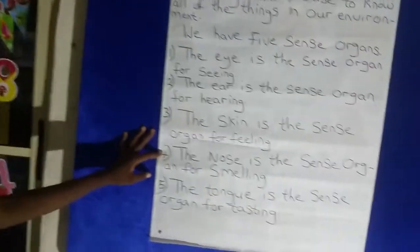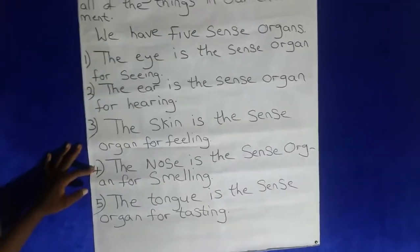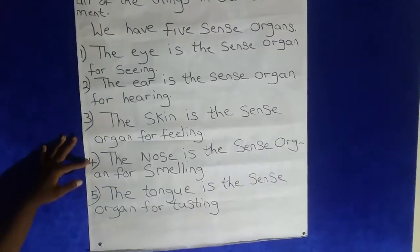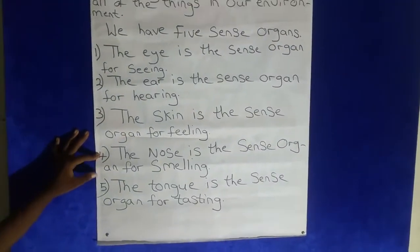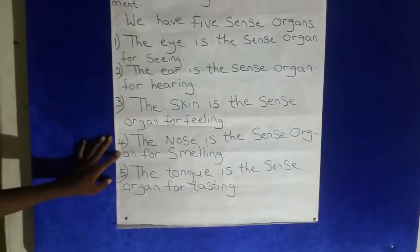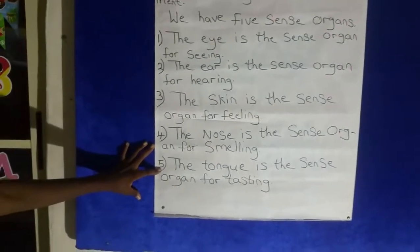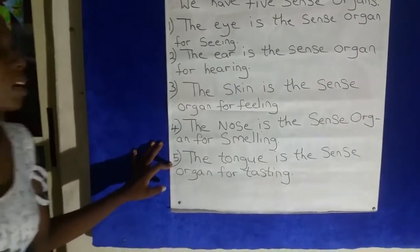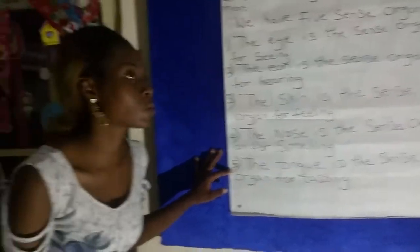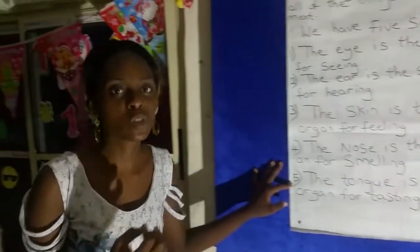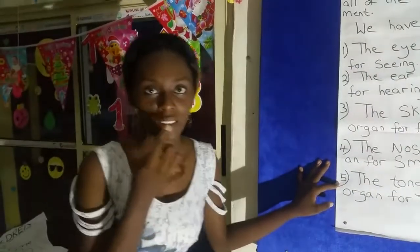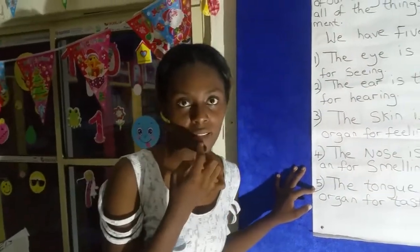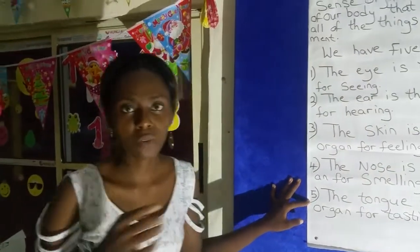The nose is the sense organ for smelling. We smell things with our nose. And the fifth one is the tongue. The tongue is the sense organ for taste. If you want to know if something is sweet or bitter, test it with your tongue.